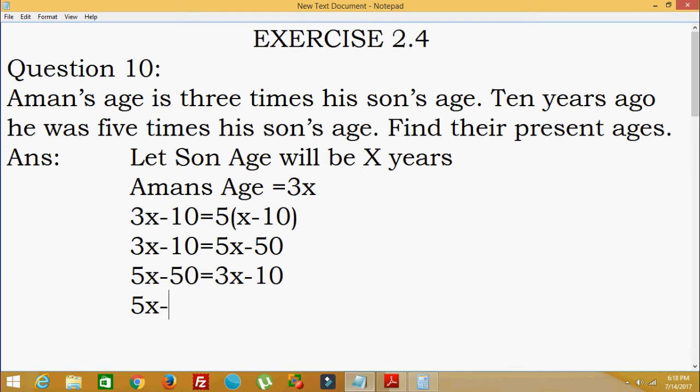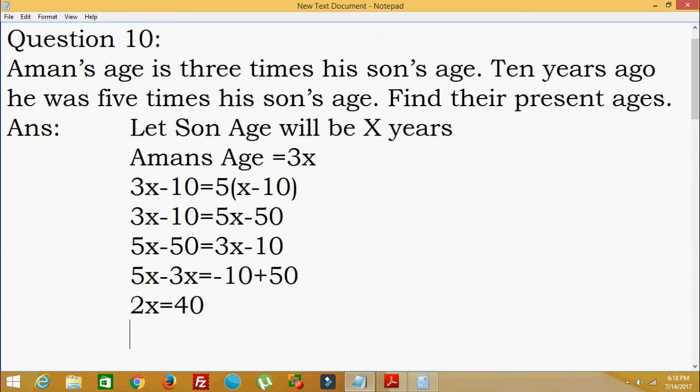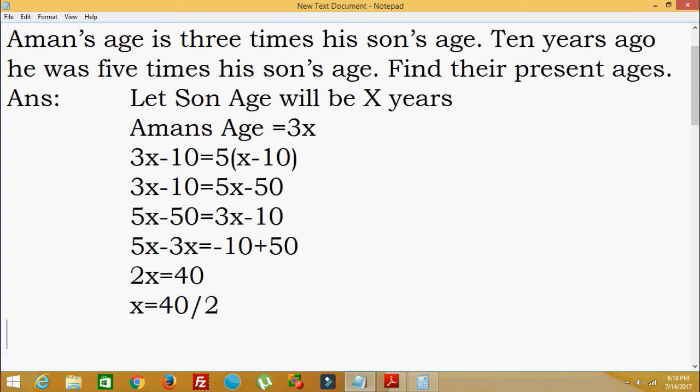5x minus 3x is equal to minus 10 plus 50 will come to this side. So this is 2x is equal to 40. So x is equal to 40 divided by 2, x is equal to 20.